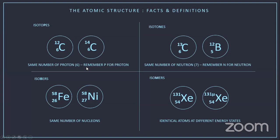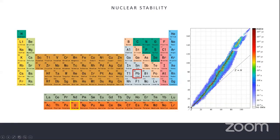Some important definitions: Isotopes have the same proton number (Z) but different atomic weights. Isotones have the same neutron number but different proton numbers. Isobars have the same mass number (number of nucleons), for example nuclei with A = 58. Isomers are the same atom but at different energy states — we will discuss isomers more when we cover radioactivity.